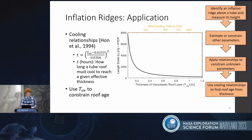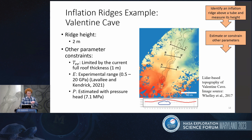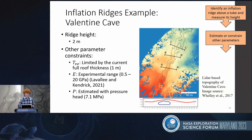I also applied the cooling relationships of Hanadol (1994) to essentially translate these relationships: for a given thickness of roof, they tell you how long the roof has to have been cooling. This can translate a roof thickness into a cooling time, allowing you to use the thickness to constrain the age of the roof. The main example where I've applied this is Valentine Cave in California. From a lidar scan of the surface above Valentine Cave, we know the ridge height is approximately 2 meters. I constrained the other parameters: the maximum effective roof thickness was limited by the full roof thickness we see today, which is one meter. The experimental range for the Young's modulus I used was between 0.5 and 20 gigapascals — quite a large range, reflecting that the roof rock is still young, viscoelastic, and soft. I estimated the pressure head to be 7.1 megapascals.